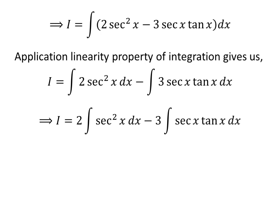Taking out the constant, we get 2 times integral of square of secant of x with respect to x.